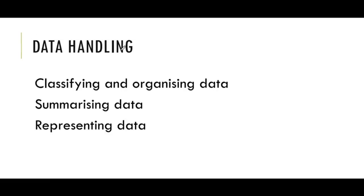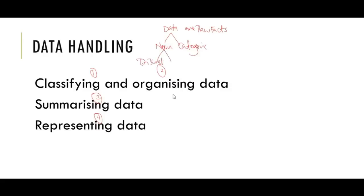This leads us to data handling. We look at classification, organizing, summarizing, and representation. The fifth step is to create questions. Data is raw facts, and data is split into two — it's either numeric or categorical. Numeric is also split into two: it's either discrete or continuous.